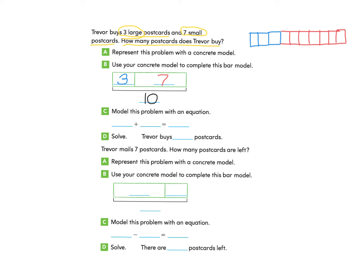Now we're ready to look at part C: model this problem with an equation. See if you can model this bar model by writing an equation — you may want to pause to do this. We can write an equation by saying three, which are the large postcards, plus seven, which are the small postcards. When you add those together, you get the total, which is ten. Trevor buys ten postcards.